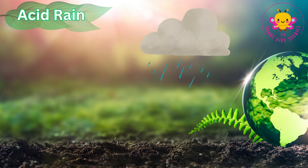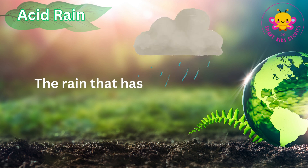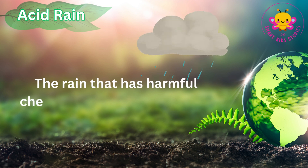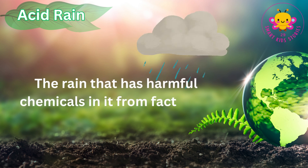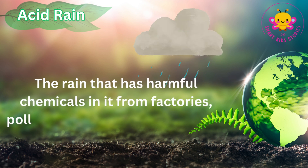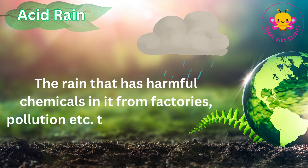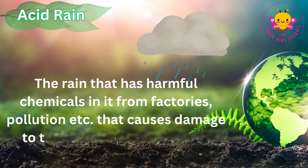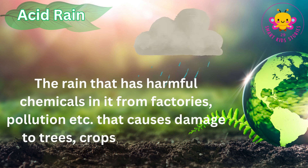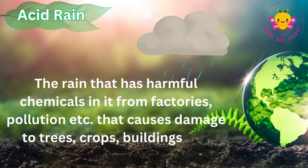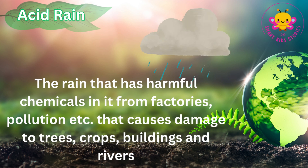Acid rain. The rain that has harmful chemicals in it from factories, pollution, etc., that causes damage to trees, crops, buildings and rivers.